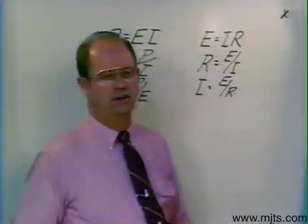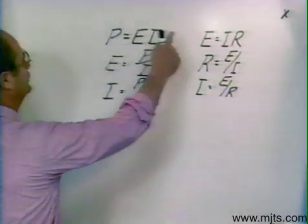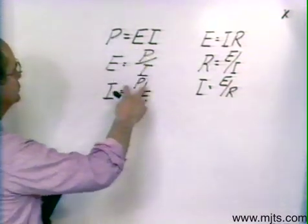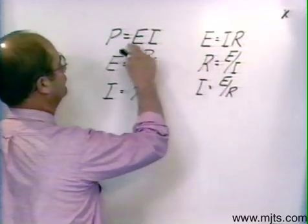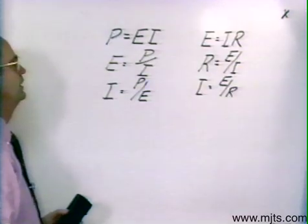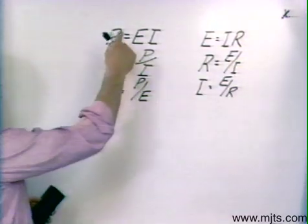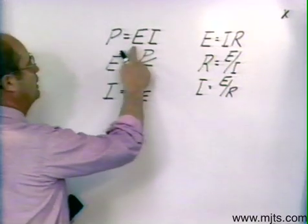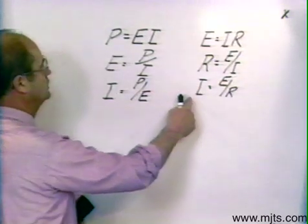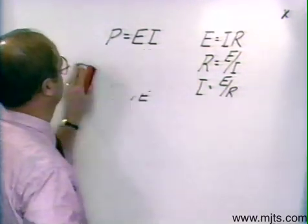Now up till now, we have dealt with two formulas. We have isolated each of the variables out of those formulas. We have two formulas, we have six equations. Now, with the basic power formula and what we know out of Ohm's Law, we can come up with two more power formulas.